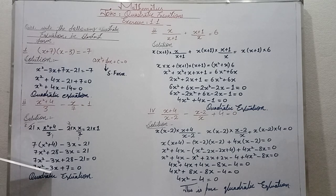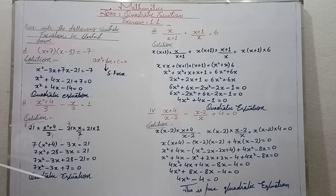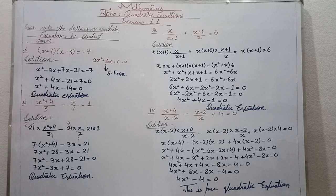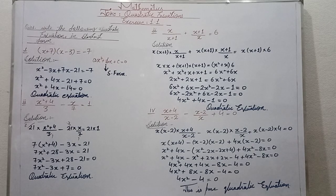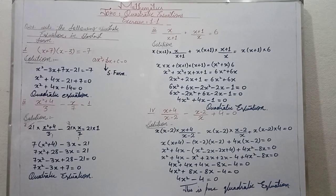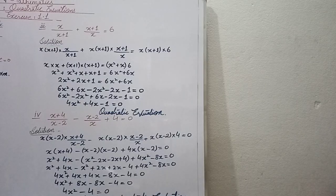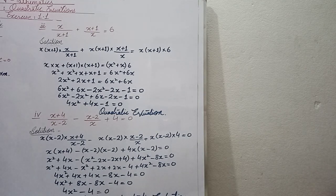Rearranging in standard form: 7x squared minus 3x plus 28 minus 21 equals 0, which gives 7x squared minus 3x plus 7 equals 0. This is a quadratic equation. Since the x term is present, it is a simple quadratic equation.